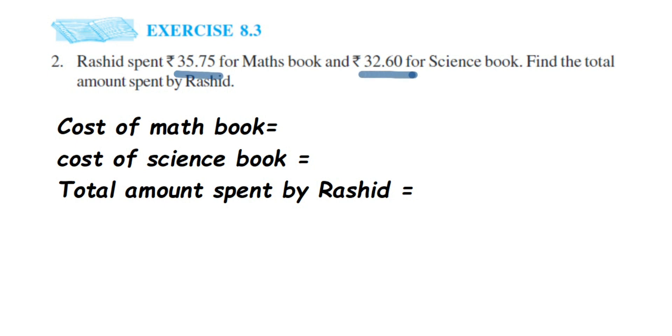Let us write down that first. Cost of math book is rupees 35.75, and cost of science book is rupees 32.60. Now we have to find out the total cost. Total means we have to add it.